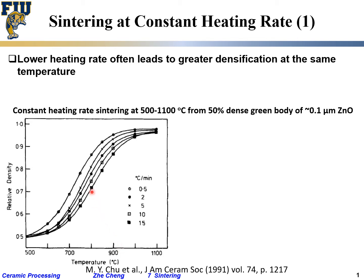If we look at the same isothermal temperature — meaning we look vertically up the plot — from the circle with a dot, that point represents a heating rate of 1°C/min. The solid line is 2, the square is 10, and the solid square is 15°C/min. You can see that as you go to higher and higher heating rate, at the same temperature, the density is lower.